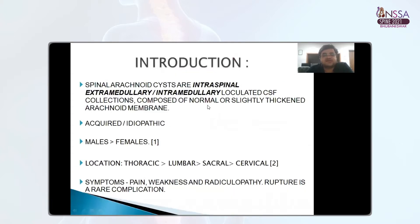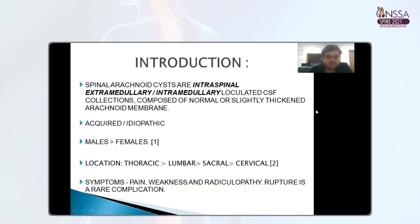Spinal arachnoid cysts are intraspinal extramedullary or intramedullary loculated CSF collections composed of normal or slightly thickened arachnoid membrane. These are either acquired or idiopathic. Males have a slightly higher predilection than females. The thoracic spine is most commonly involved, along with lumbar and sacral; cervical is the least commonly involved. Symptoms vary from pain, weakness, and radiculopathy.